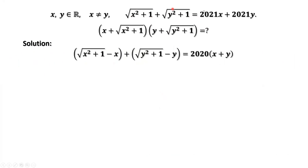This is the given condition. We have minus x minus y on both sides of this equation. Then we have the square root of x squared plus 1 minus x, plus the square root of y squared plus 1 minus y, equals 2020x plus 2020y.